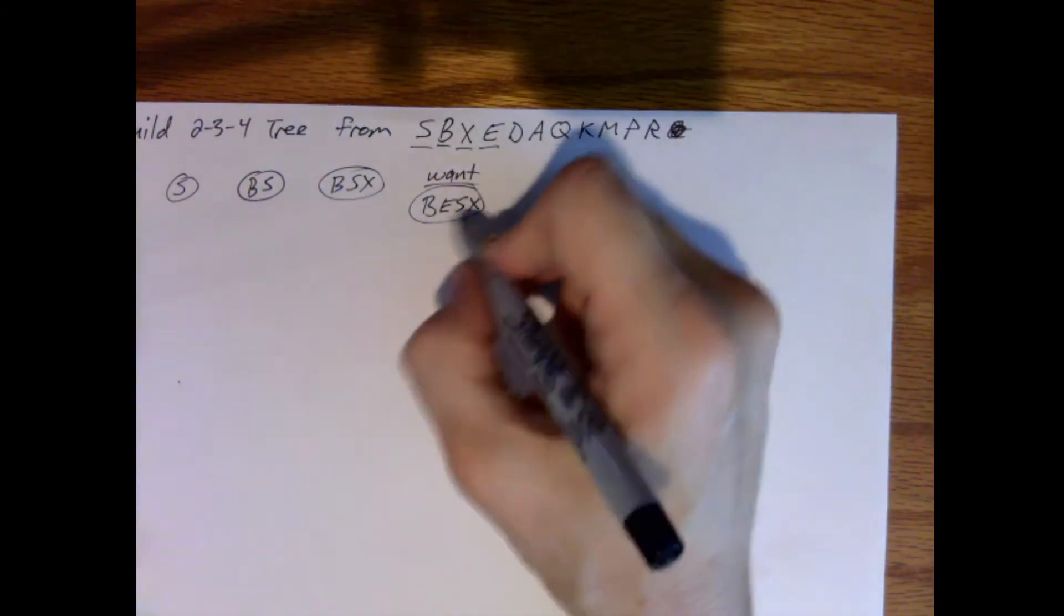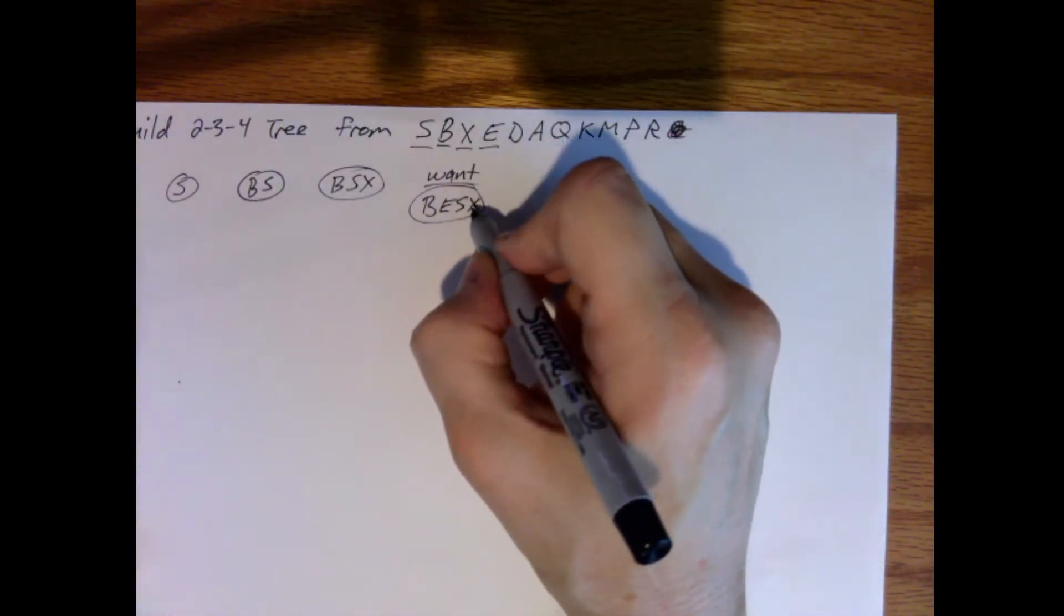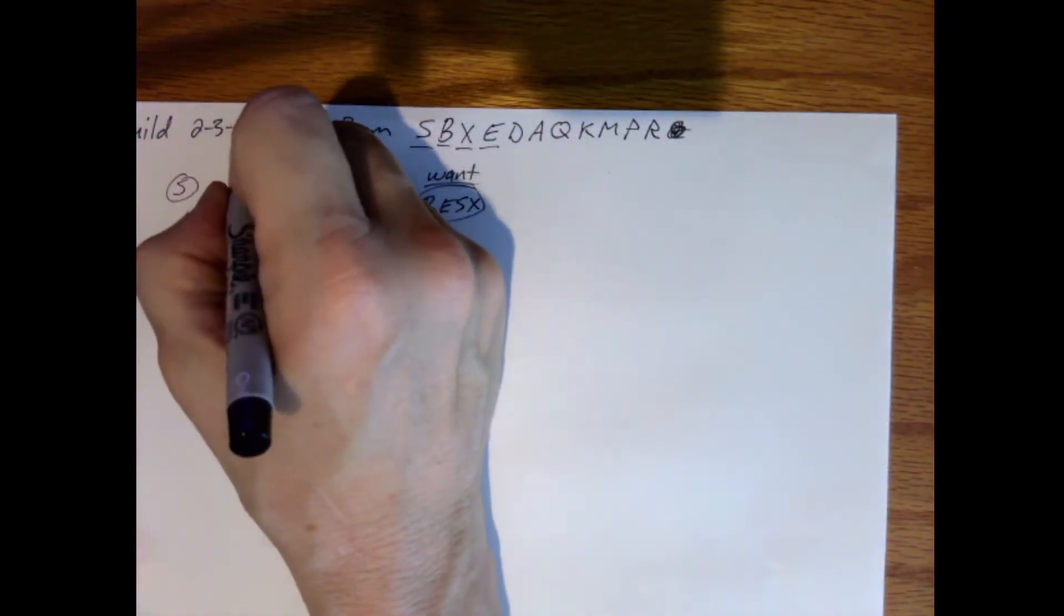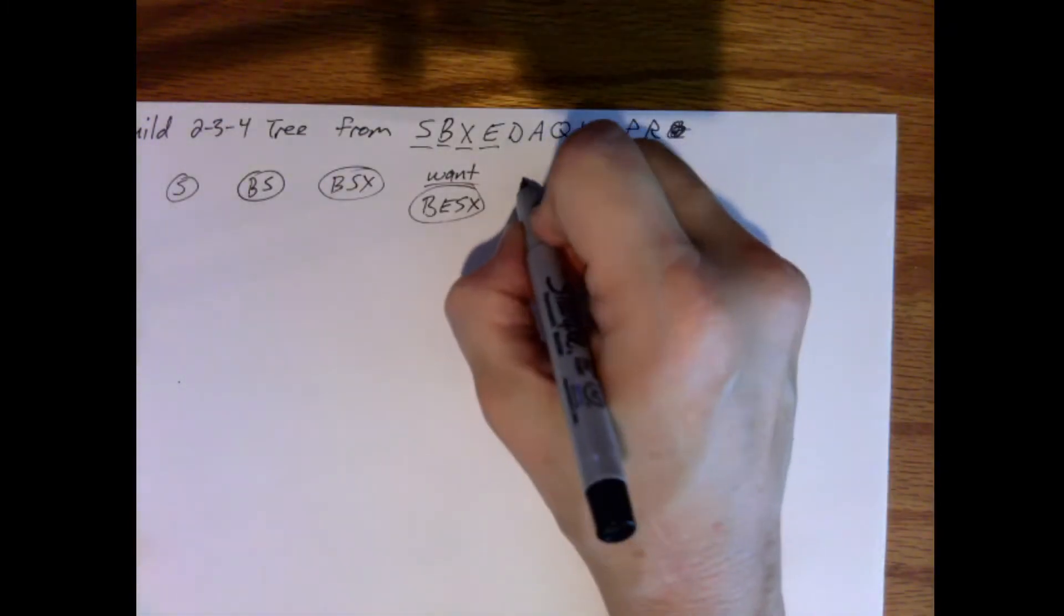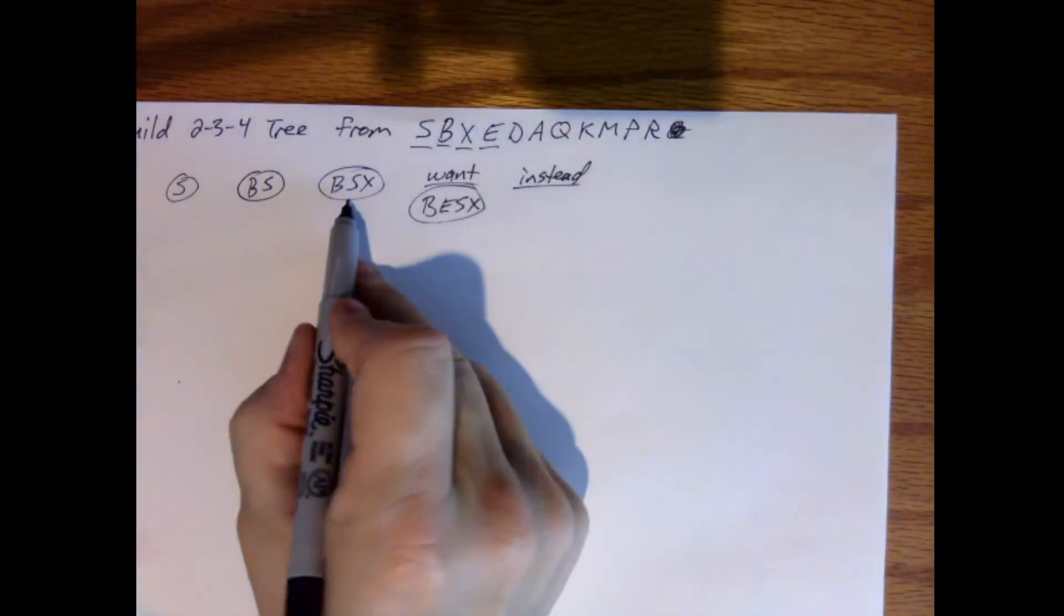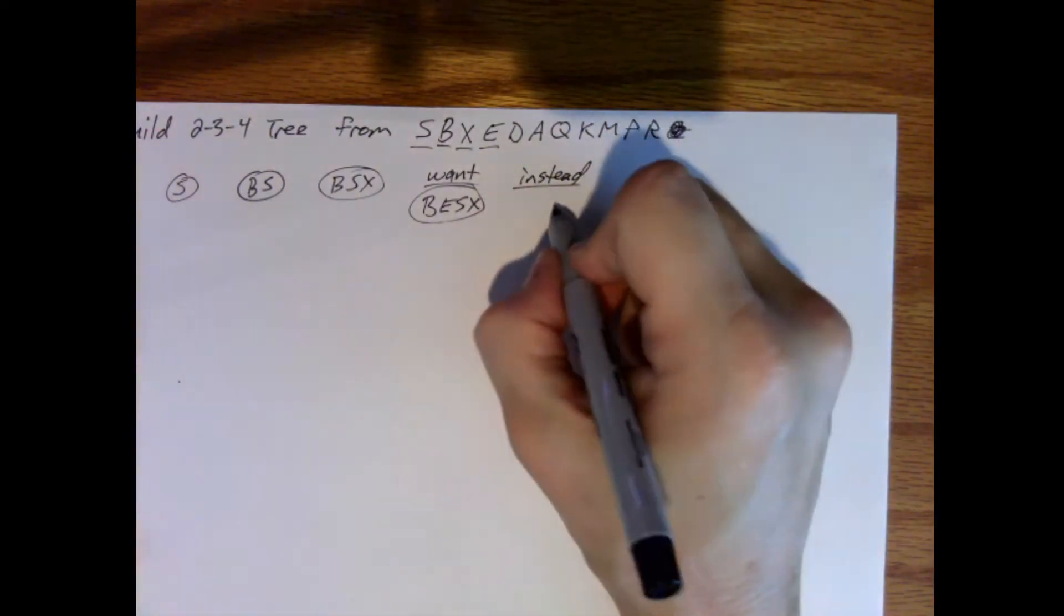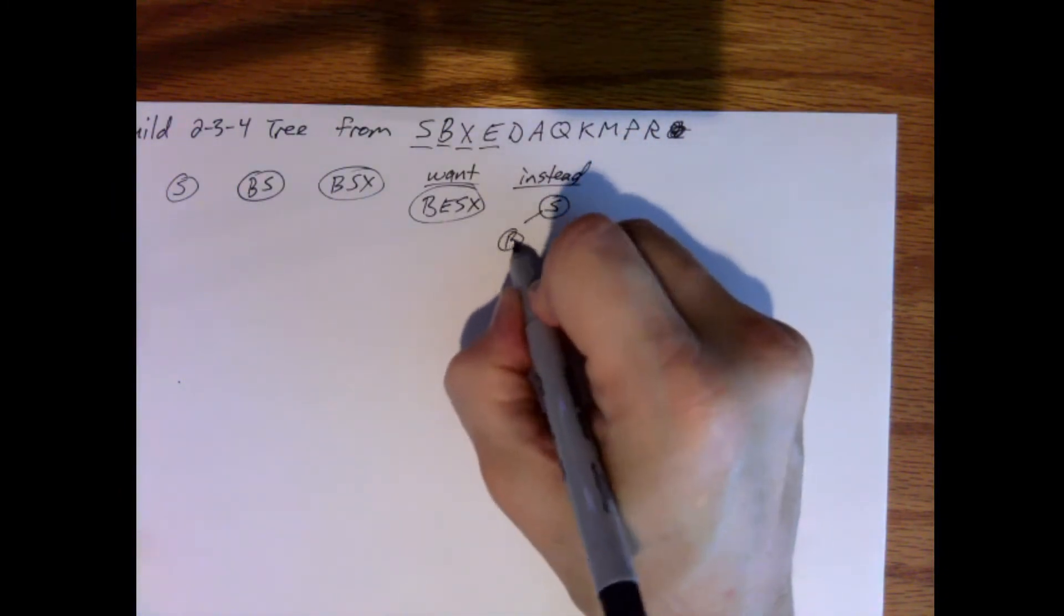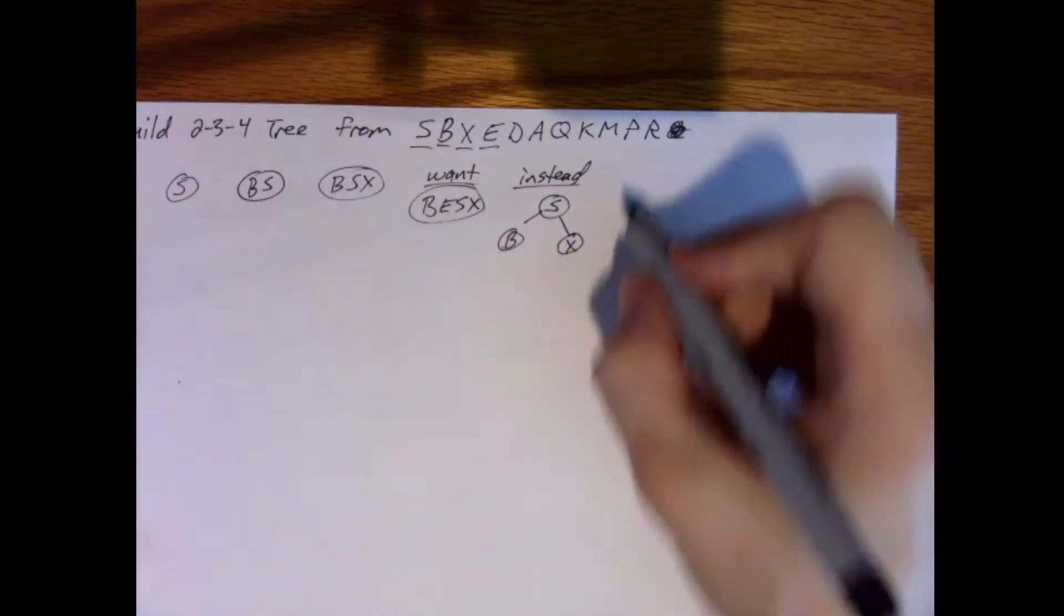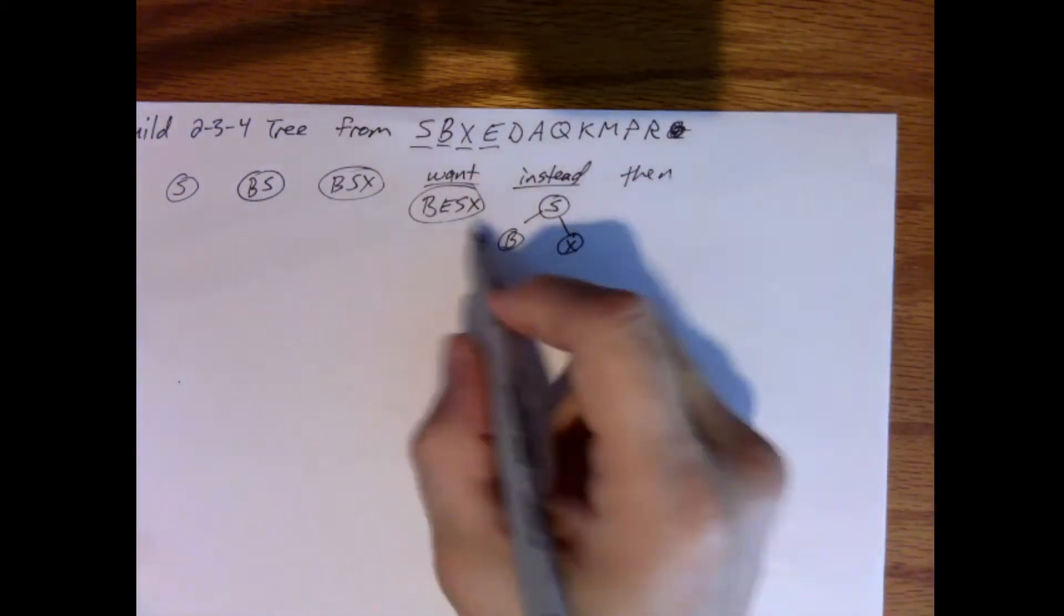But the problem is there's four keys here. We can't do that because we only have at most four children. So instead, we're going to split based on the middle value. So we'll have S. Over here we have B, which is before S, and X, which is after S.